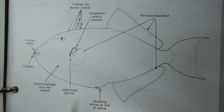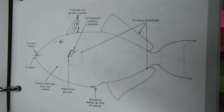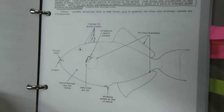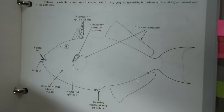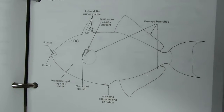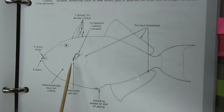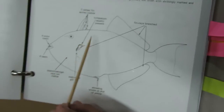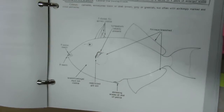In the case of Balistidae, Diodontidae, Ostraciidae, and Triacanthidae species, the lateral line is absent.